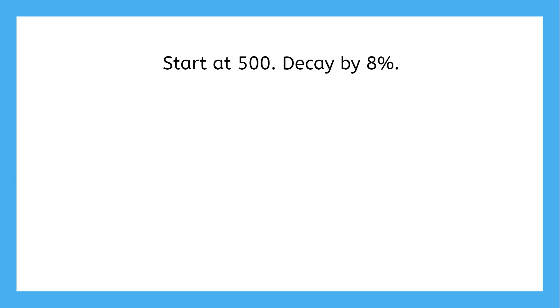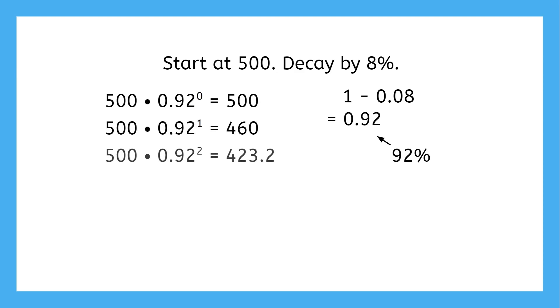So in order to decay by eight percent, we would subtract eight hundredths from one, resulting in a growth factor of point nine two. This is the same as ninety-two percent, eight less than a hundred percent. This function starts at 500, and ninety-two percent of 500 is 460, and ninety-two percent of 460 is 423.2, and we can keep going with the amounts decaying further and further.